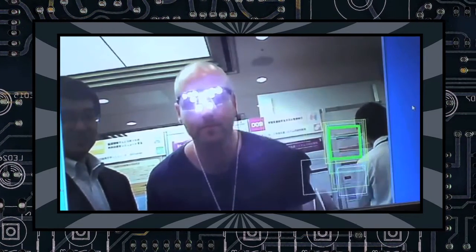The privacy visor they have developed uses 11 near-infrared LEDs. The lights from these near-infrared LEDs can't be seen by the human eye, but when it passes through a camera's imaging device, it appears bright.